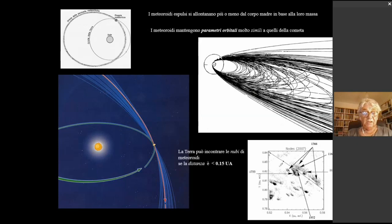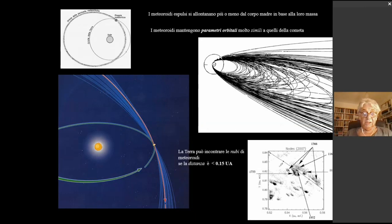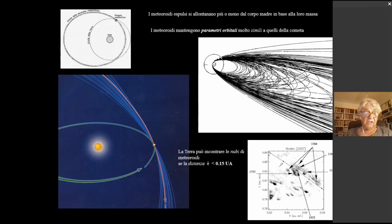Infatti la Terra, durante il suo moto nello spazio attorno al Sole, può incontrare queste nubi di particelle solo se passano abbastanza vicino all'orbita terrestre, a meno di 0,15 unità astronomiche. Solamente in questo caso si ha la pioggia di stelle cadenti. Nel caso delle Perseidi, la Terra ogni anno arriva là dove la Swift-Tuttle ha lasciato delle nubi di particelle nei suoi precedenti passaggi.